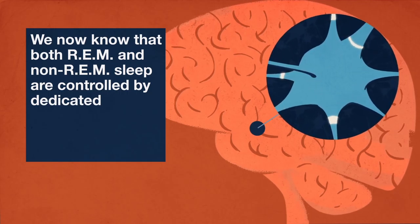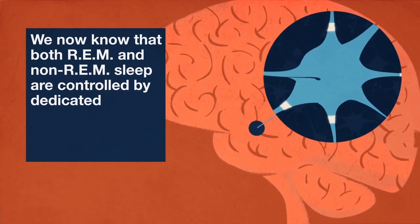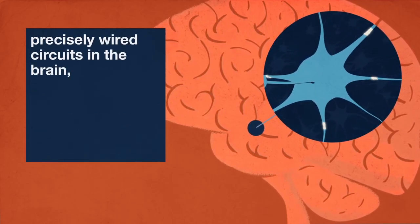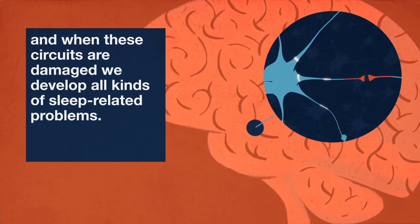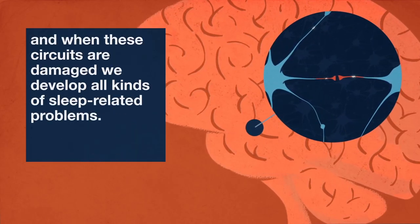We now know that both REM and non-REM sleep are controlled by dedicated precisely wired circuits in the brain, and when these circuits are damaged, we develop all kinds of sleep-related problems.